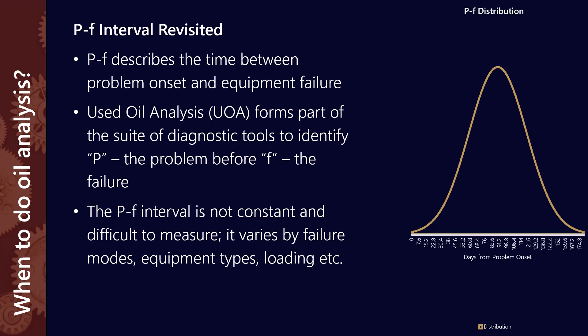We can estimate the P to F interval using statistics. We can think of it as having a distribution of values — much like most men are about 5 foot 10 in height, with the occasional person at 6 foot 9 and the occasional person under 5 foot. P to F intervals are normally distributed as well. For a bearing as an example, most failure modes occur over a period of about 90 days or 3 months, with the occasional catastrophic failure within hours and the occasional one taking 6 months to a year to develop.